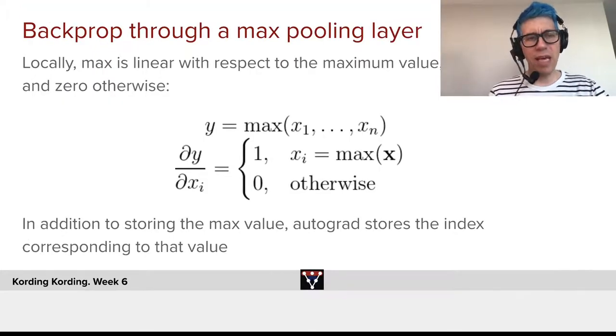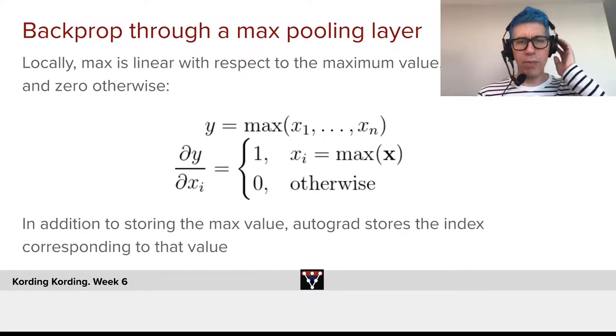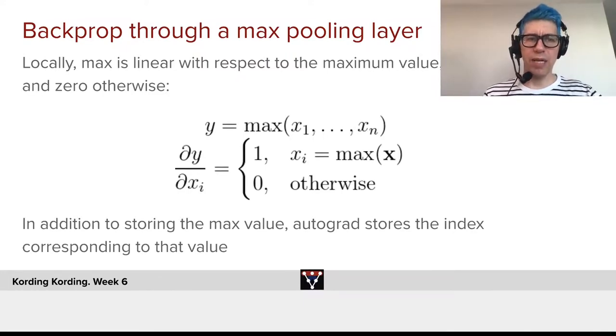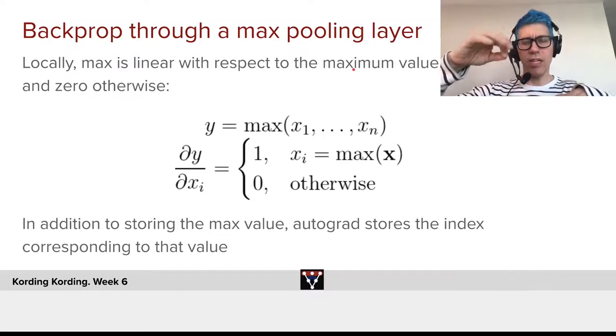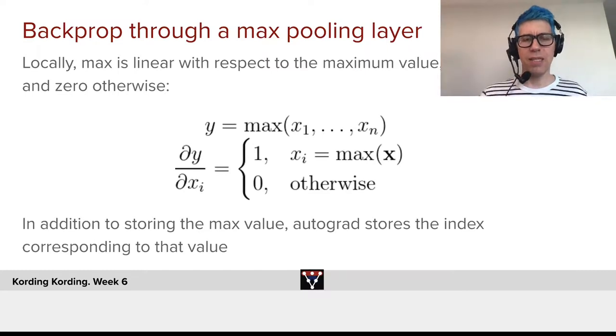Now that leads us with the other part, which is we need to do backpropagation through a max pooling layer. Locally, max is linear with respect to the maximum value. At any given point of time, one value will be larger than the others, unless you're at the place where they're all the same, which will effectively never happen.